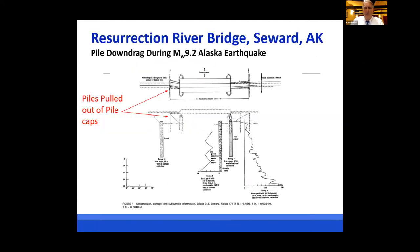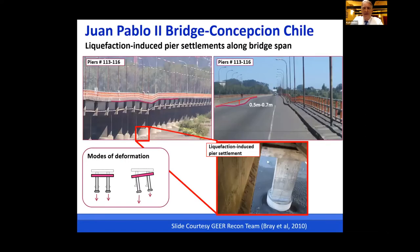Has this caused problems? Yes, in past earthquakes. One case history is from the Resurrection River in Alaska during the magnitude 9.2 Alaska earthquake in 1964, where down drag in gravelly soils that liquefied actually pulled piles out of the pile cap. Another case history is the Juan Pablo Segundo Bridge in Concepción, Chile, where investigation showed that down drag facilitated settlement of a pier on the order of half a meter. This is a slide from the GEER team that I participated with in Chile.